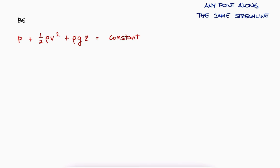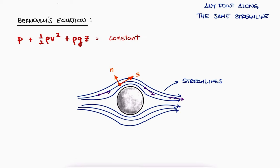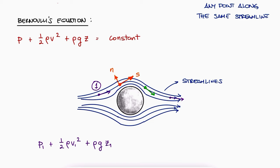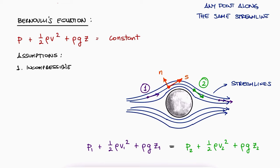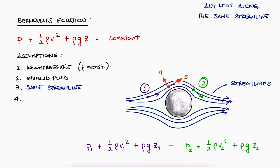This is what we know as the Bernoulli equation. We can say, for example, that these three terms at location one add up to what the same three terms add up to at location two. Remember that we assume the fluid is incompressible, since we used a constant value for rho; inviscid, since we didn't account for shear forces due to viscosity; and as stated at the beginning with the definition of a streamline, that the flow is in steady state.